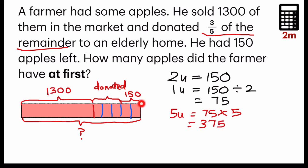Now the last part, I've already found out this five units. To find out what he had at first, I need to add the amount of apples that he had sold in the market, which is 1,300. So the last step, 375, I will add 1,300, which I will get 1,675, which is what he had at first.